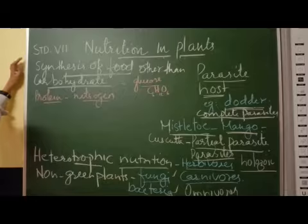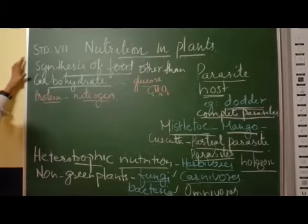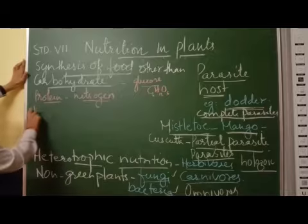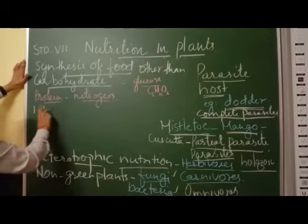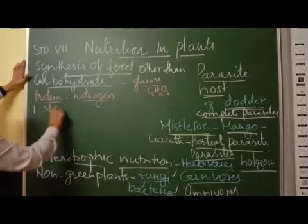How do plants get nitrogen? Plants get nitrogen in two ways. First of all, plants get nitrogen by nitrogen fixation.